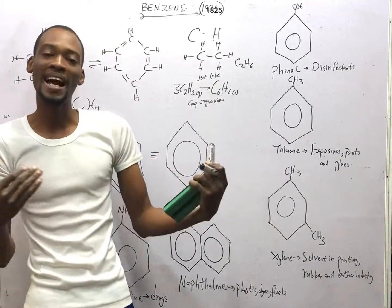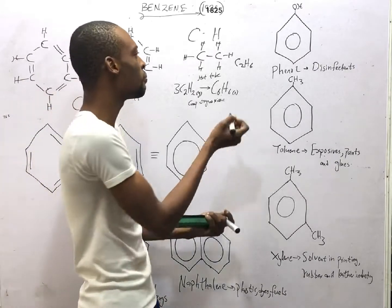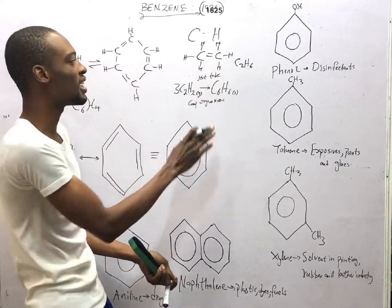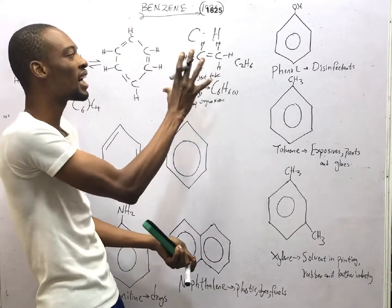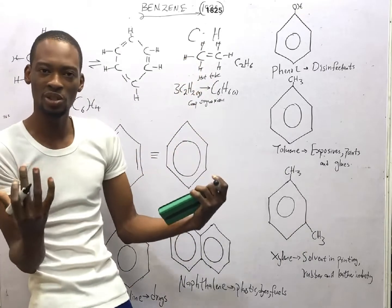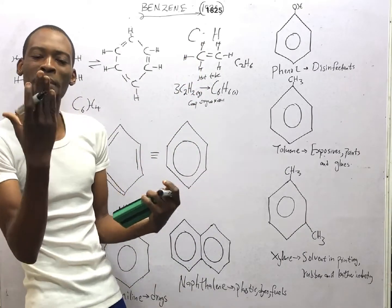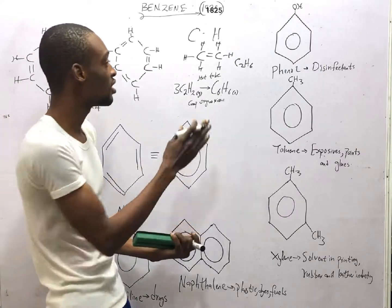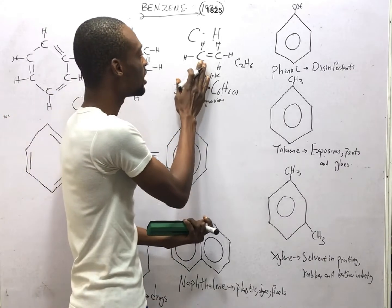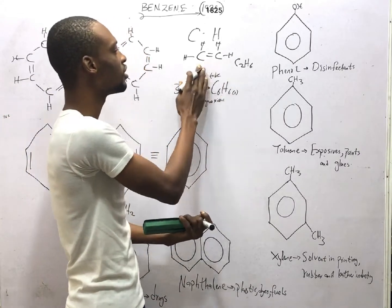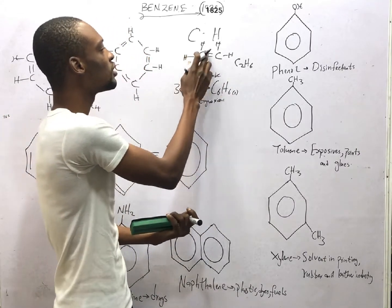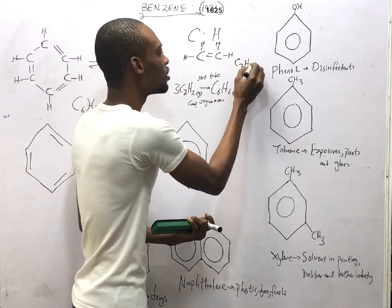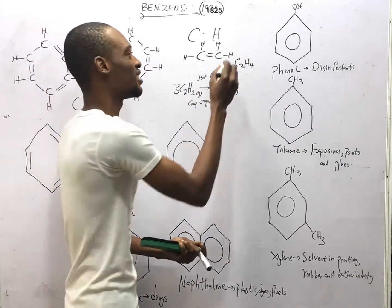Then we have some hydrocarbons that contain double bonds. If there is a double bond, we can no longer have six hydrogens, since carbon can carry a maximum of four bonds — carbon is tetravalent. So we remove two hydrogens, giving us C2H4. This is an alkene, ethene.